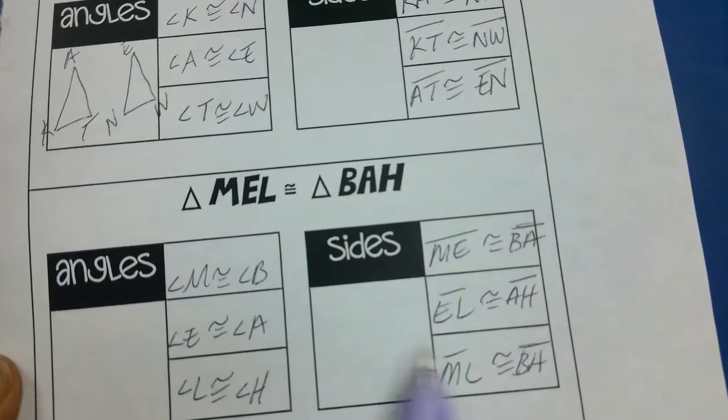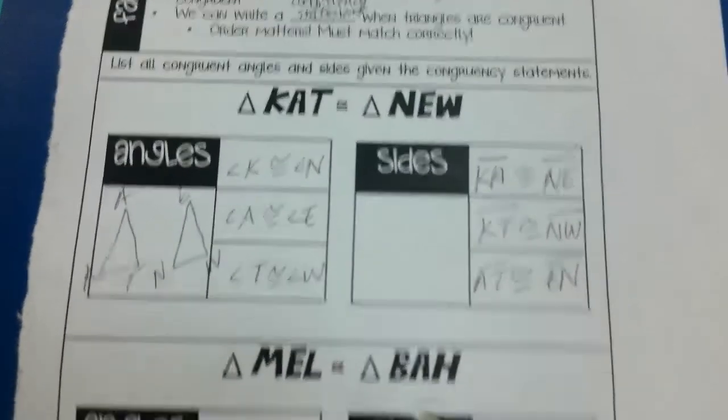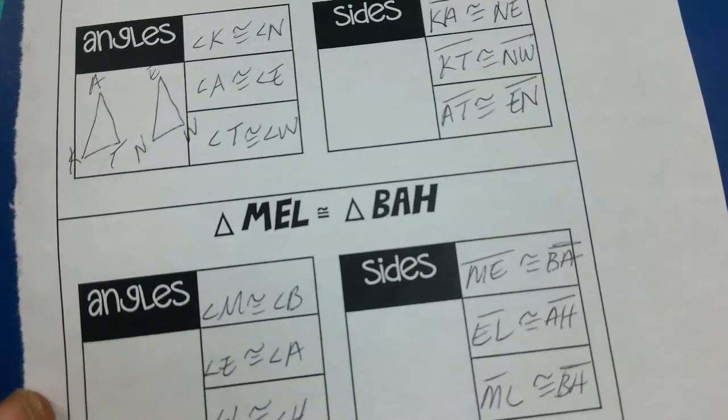So whenever I write a triangle congruency statement, order matters because I can just look at the statement and I can say what parts are congruent. So again, you can do it either way: draw the picture so you can visually see it, or look at the way it's written so you can see it.